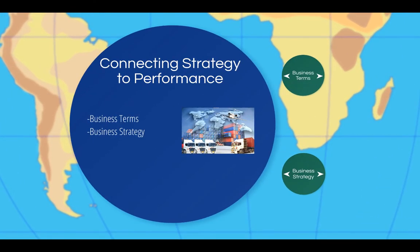In logistics, it is important to connect strategy to financial performance. In this section of the lecture, we will discuss the levels at which strategy can be formulated — mainly the corporate level, business unit level, and functional level — and the four main business strategies: cost leadership strategy, differentiation strategy, focus strategy, and information strategy.